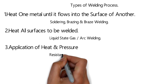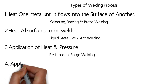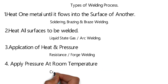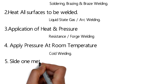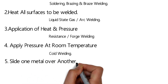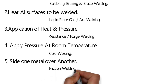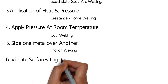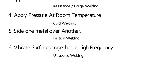The application of heat along with pressure corresponds to resistance welding or forge welding. The fourth type is the application of pressure at room temperature, which is known as cold welding. The fifth type involves sliding one metal over the surface of another metal, which is friction welding. The sixth type is vibrating the surfaces together at high frequency, which is ultrasonic welding.